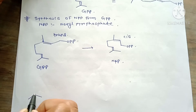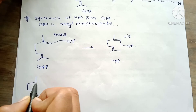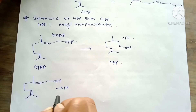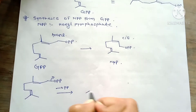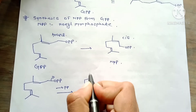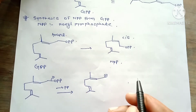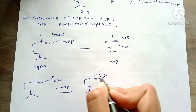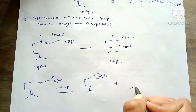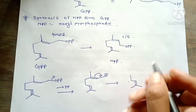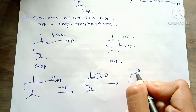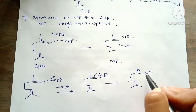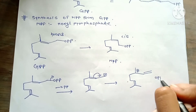The structure of GPP is CH3, CH3 double bond, CH2, CH2, CH3 double bond, CH2, OPP. The first step is the loss of OPP and formation of an allylic carbocation: CH2, CH2, CH3 double bond, CH2+. The next step is the double bond shifting to form a tertiary carbocation: CH3, CH3 double bond, CH3 double bond, CH2, CH2+, CH2 double bond, CH3 double bond, CH2. The next step is the addition of OPP.